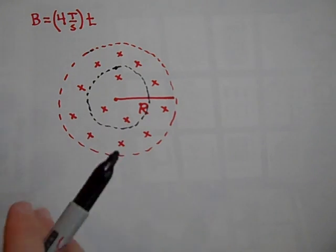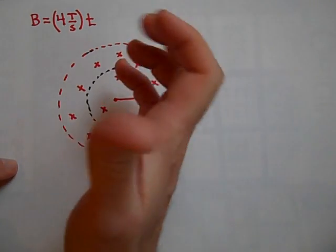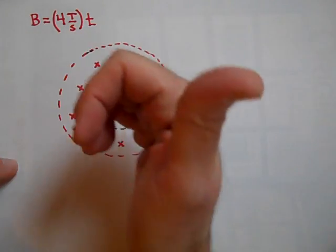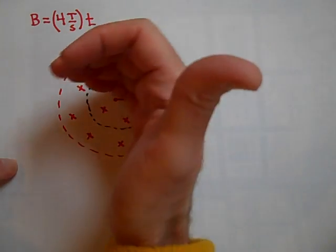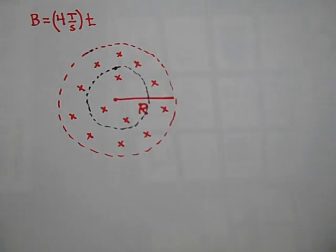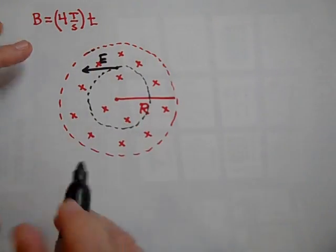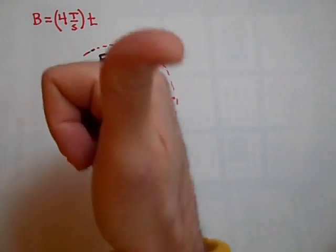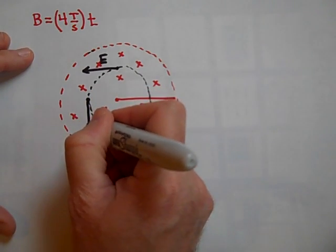If it's increasing with time, that means the X's are getting greater and greater, so it's going to try to make dots. To make dots, it's going to stop the flux from changing inside it, and so it's going to induce a field this way.